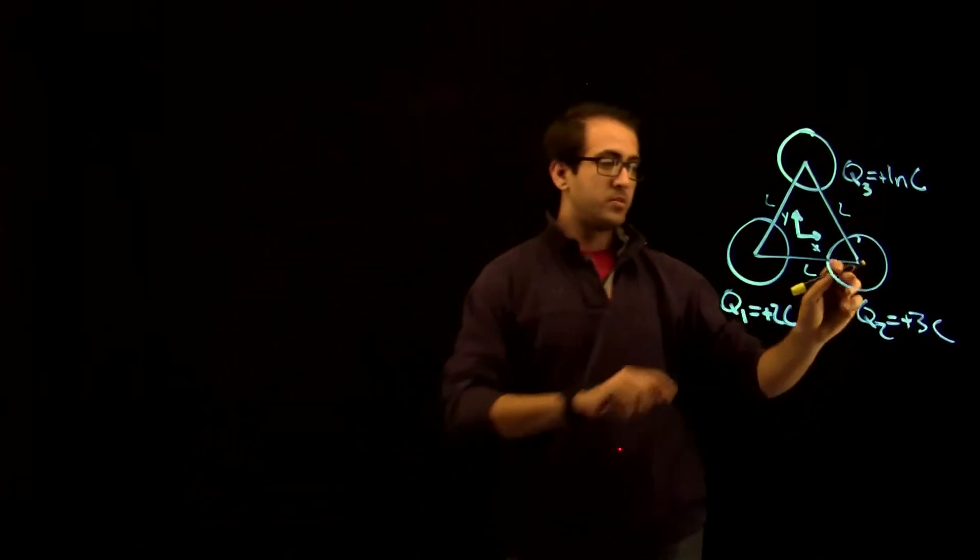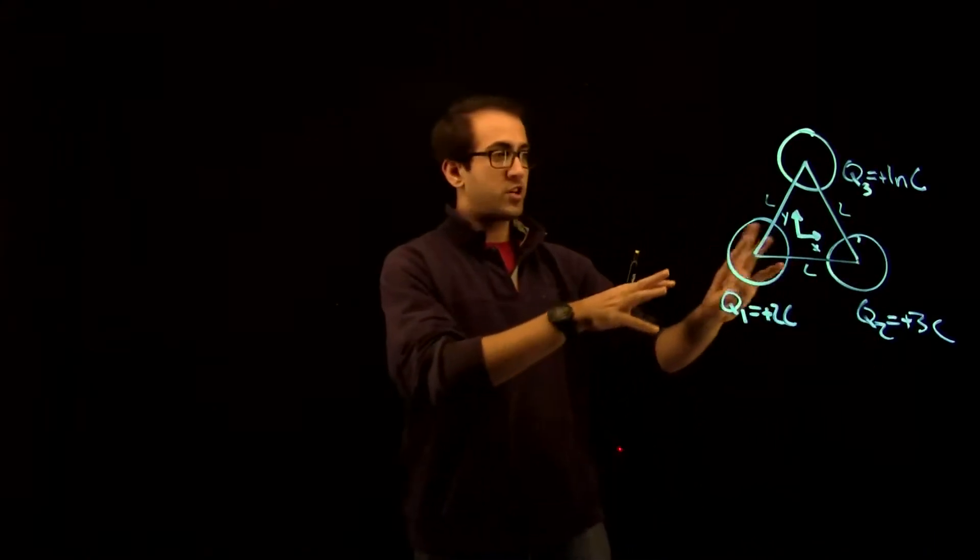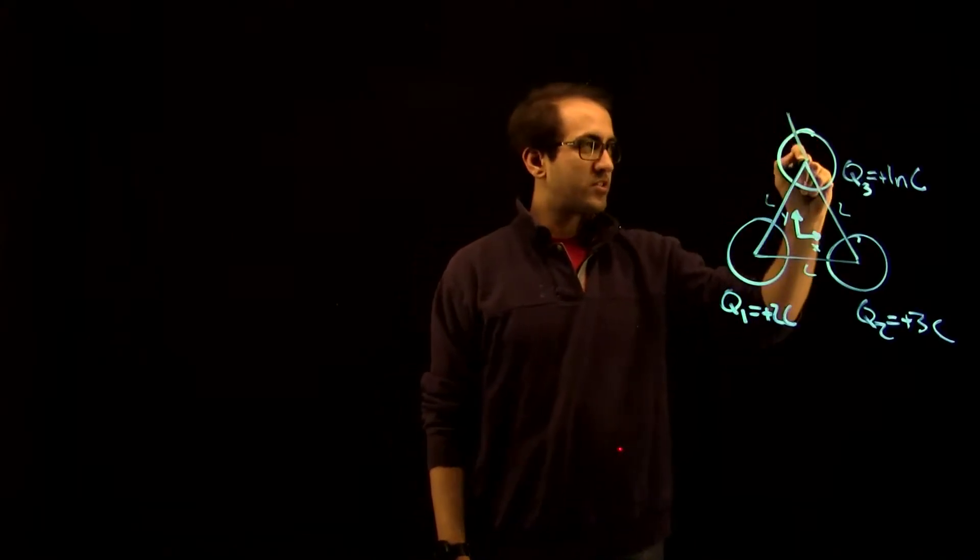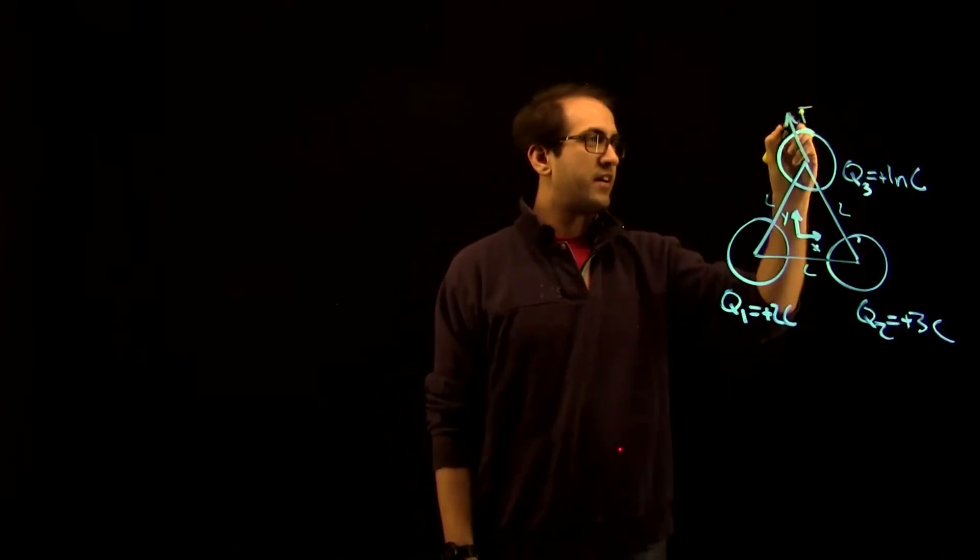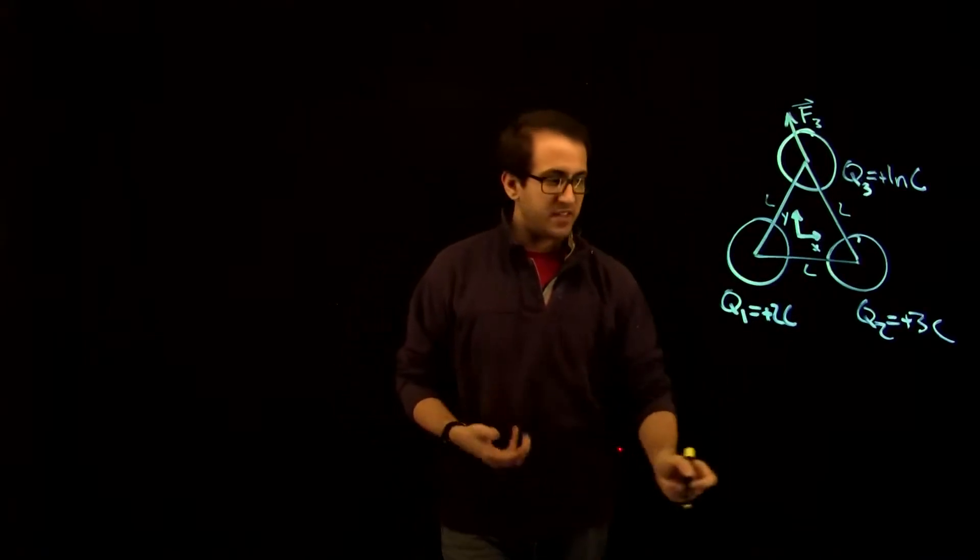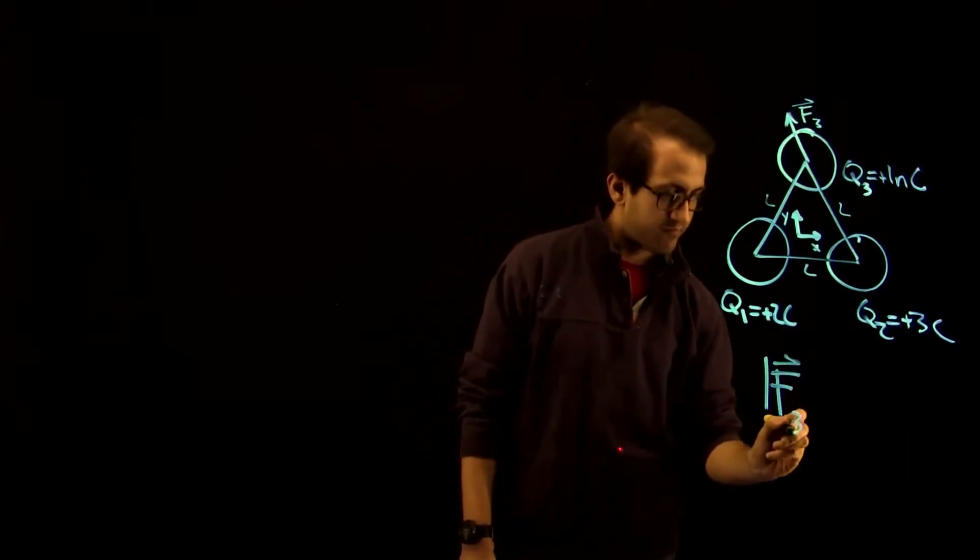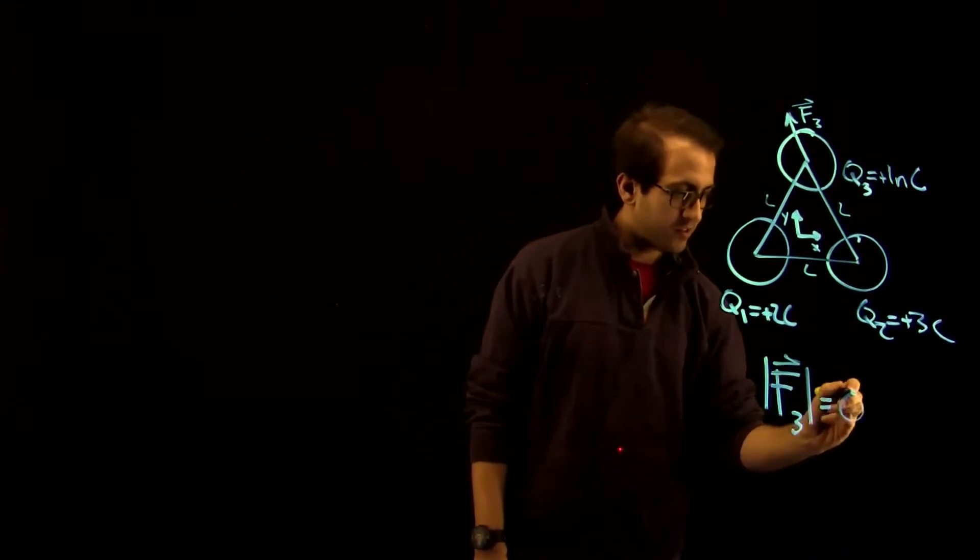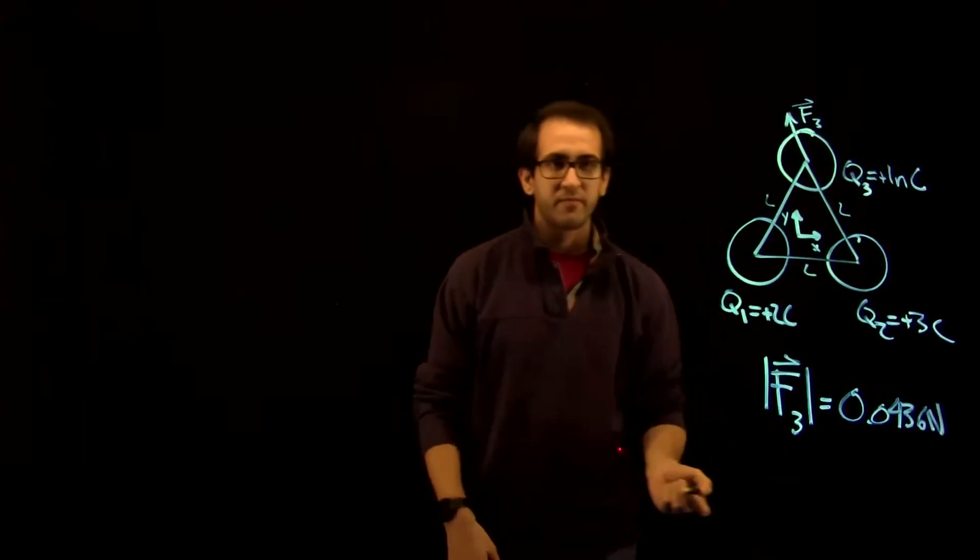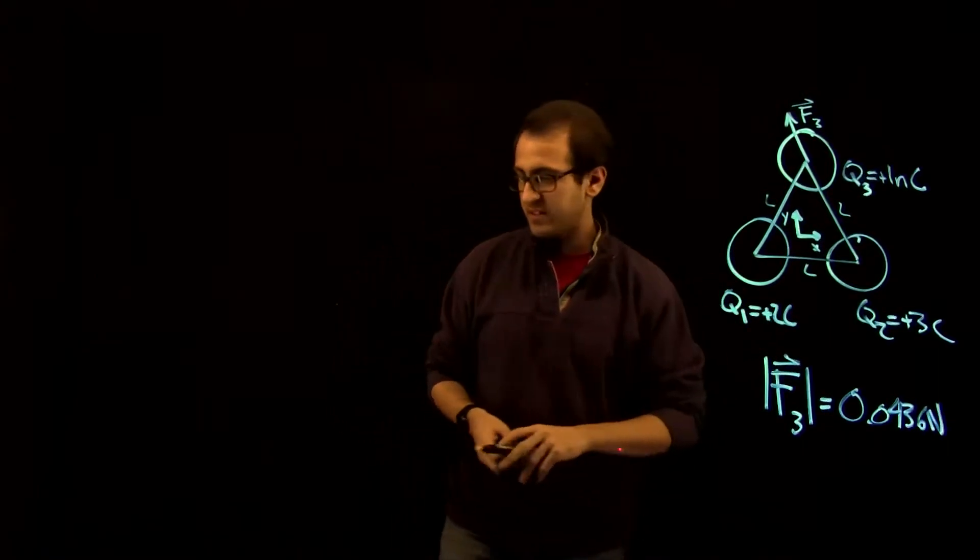Q1 and Q2 exert a force on Q3. All of the charges here are positive, so like repels like. And Q3 feels a repulsive force in this direction. We call that F3. And what we solved is that the magnitude of F3 is equal to 0.0436 newtons. We're not going to need to use the direction in this case, because what we're going to do now is we're going to add a spring.